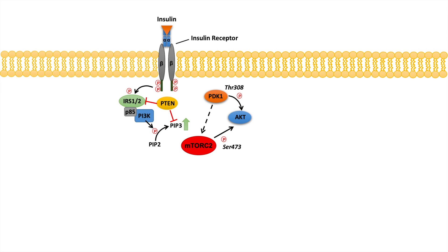Those are the two important phosphorylation sites to remember from this lesson on AKT with regards to insulin signaling: PDK1 will phosphorylate AKT at threonine 308, and indirectly PDK1 will lead to mTOR complex 2, which will itself phosphorylate AKT at serine 473. So remember threonine 308 and serine 473.